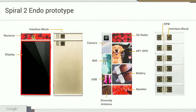This is the Spiral 2 Endo, and you can see the industrial design of it here. The endoskeleton has a spine that goes down the middle and has ribs. Early in the project, we also considered exoskeleton designs, where all the modules would go into a box.